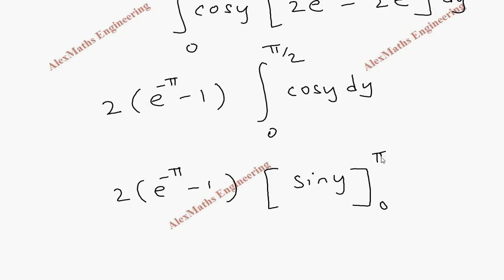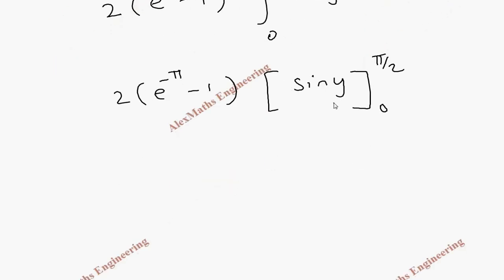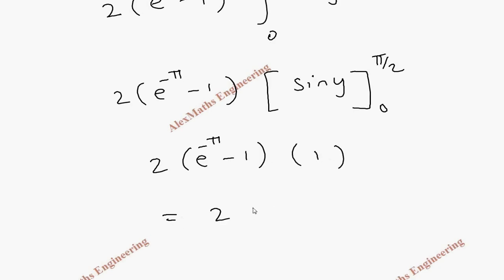This gives 2(e^(−π) − 1) times sin(y) evaluated from 0 to π/2. Substituting the limits: sin(π/2) = 1 and sin(0) = 0. So the final answer is 2(e^(−π) − 1).